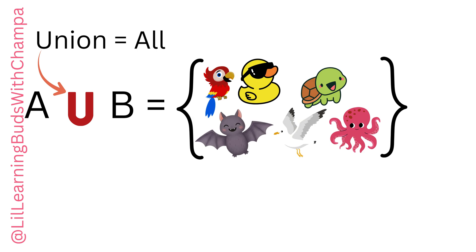So what is A union B? It's Parrot, Duck, Turtle, Bat, Seagull, and Octopus.